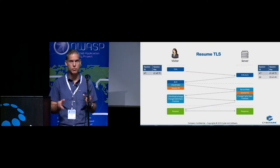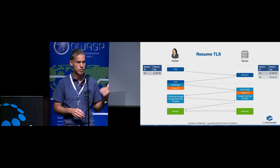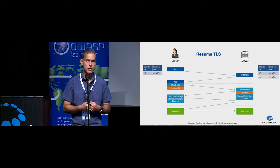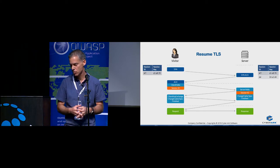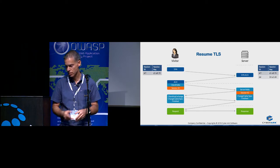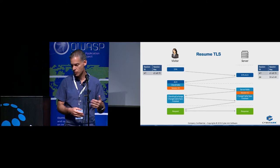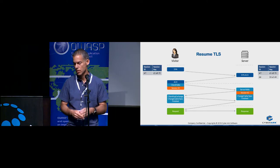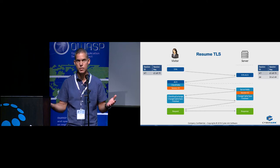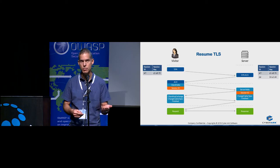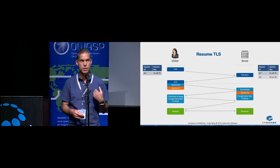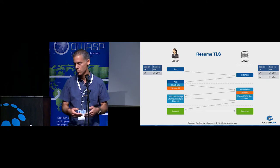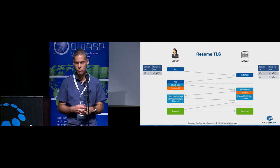Before I get to TicketBleed, I want to give a bit of background on the TLS handshake. The TLS handshake is there to create session keys that you can use for communication. Once a session ends, there's a way for the client to try to resume the session — to see whether we can use the same keys from the previous session, whether they are still valid. This saves the generation of new keys, which is very costly in terms of performance.